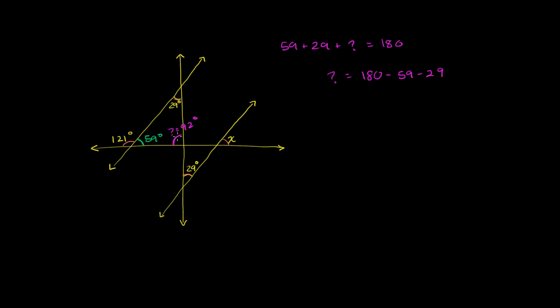Well, if this right here is equal to 92 degrees, this angle right here is vertical with that angle, so it is also going to be equal to 92 degrees. And now we're getting pretty close. We can zoom in on this triangle down here. Let me just say that over there is also going to be 92 degrees.